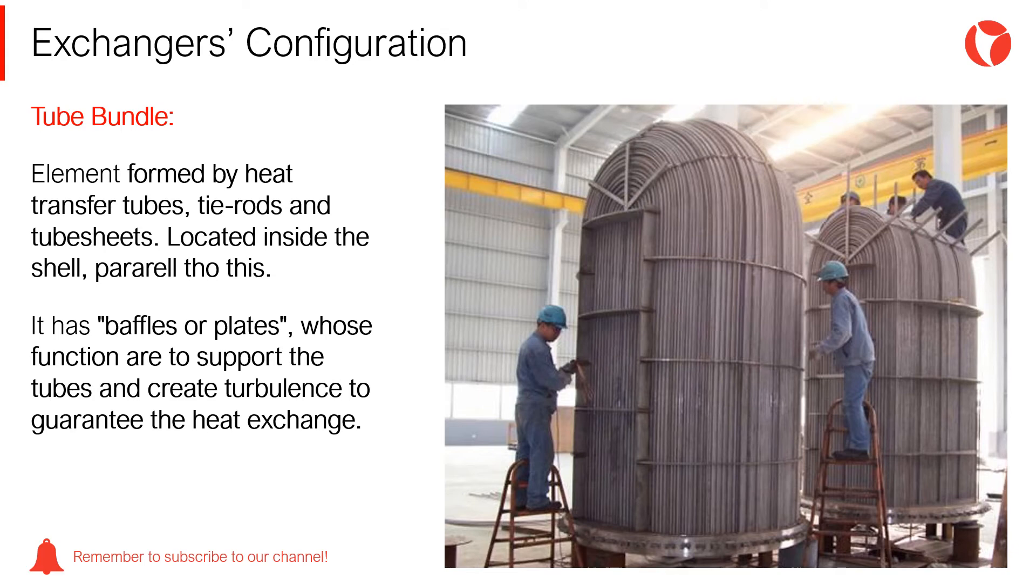Another of the main elements is the tube bundle. This element is formed by heat transfer tubes, tie rods and tube sheets. It is located inside the shell and the center line of this element is parallel to the center line of the shell. The tube bundle has baffles or plates, which function is to support the tubes and create turbulence to guarantee the heat exchange.